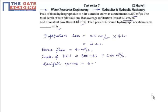...is equal to 6 minus 2, that is infiltration loss, that would be equal to 4 centimeter. That's why peak of 4-hour unit hydrograph is equal to 260 divided by rainfall excess.